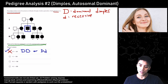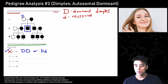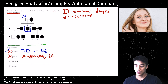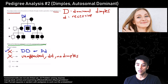For choice B, they want you to analyze person 1,1 — generation one, person number one. Is this person big D, little d? The answer is no, because this man is unaffected and does not have dimples. Therefore his genotype has to be little d, little d — no dimples, it's the recessive allele.